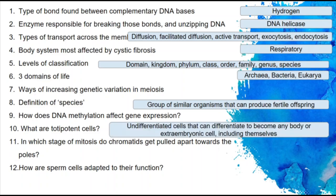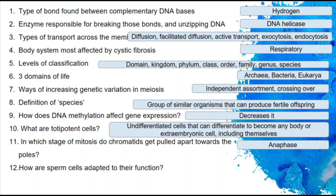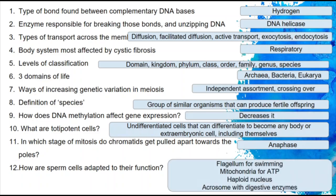Totipotent cells are undifferentiated cells that can differentiate to become any body or extra-embryonic cell, including themselves. At what stage of mitosis do chromatids get pulled apart towards the poles? It's anaphase. How are sperm cells adapted? They have a flagellum for swimming, mitochondria for ATP, a haploid nucleus so that when they combine with the egg nucleus it restores the diploid number, and an acrosome with digestive enzymes to help digest through the layers of the egg.